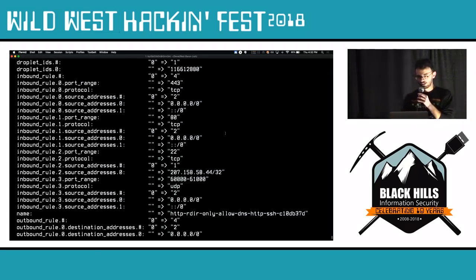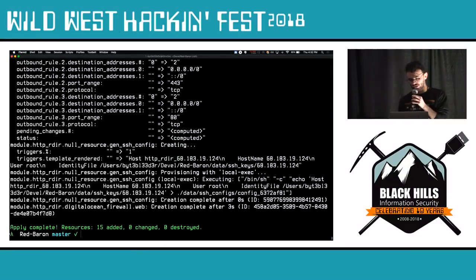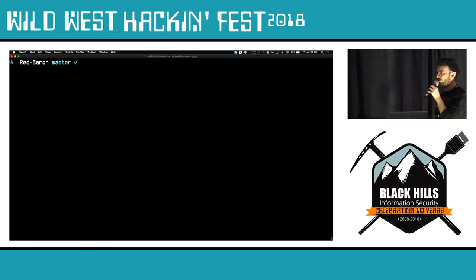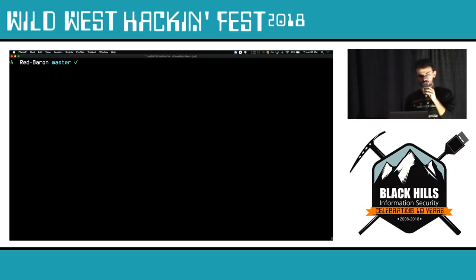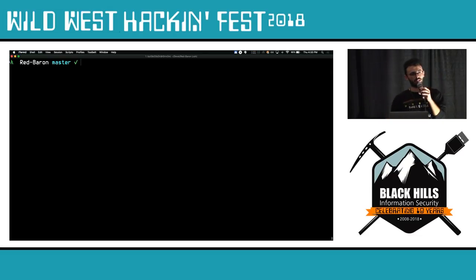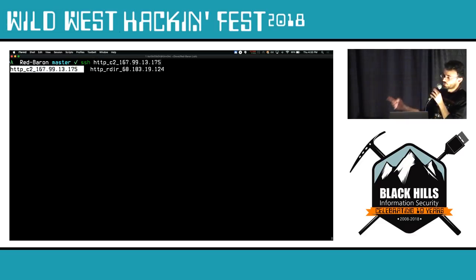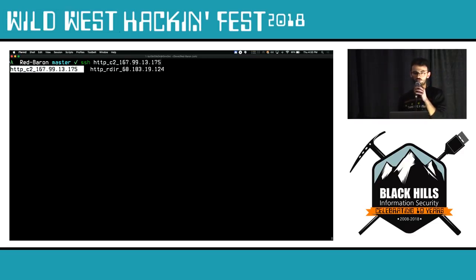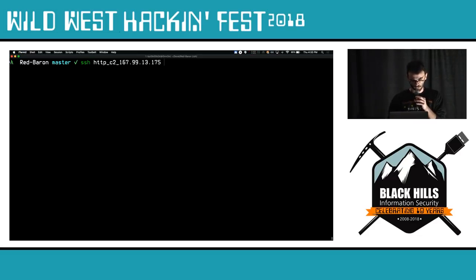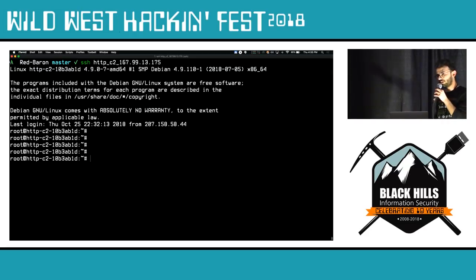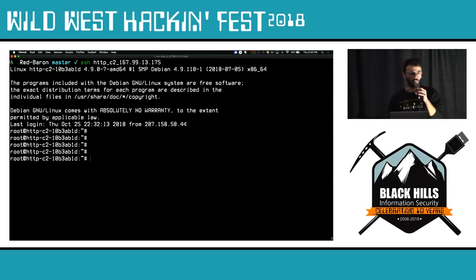I can't believe this worked on this internet. We've created 15 resources and everything seems to be up. Since we also generated SSH config files along with all these hosts, we can make SSH tab-complete all of the created infrastructure we just set up using Red Baron. If I type SSH now and tab, it autocompletes — that saves an enormous amount of typing in terms of specifying the private key and everything you'd normally have to do when you spin stuff up.